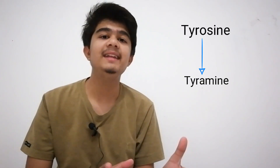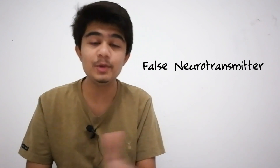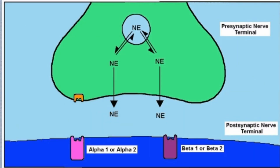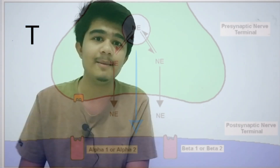Before understanding the cheese reaction, look at tyramine metabolism. Tyramine is a substance derived from an amino acid called tyrosine. Tyramine is a false neurotransmitter because in our nerve terminals it replaces noradrenaline, which is a sympathetic neurotransmitter, and causes sympathetic effects in the body.